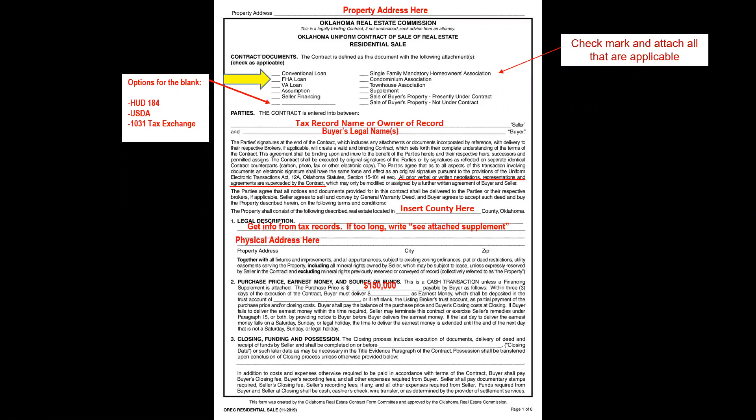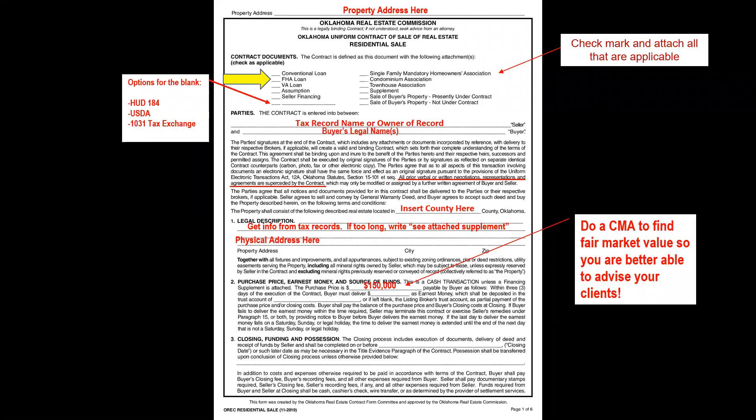In paragraph two, the purchase price is whatever the buyer wants to offer. Before allowing the buyer to select an amount, please do a market analysis to determine fair market value so you can better advise your clients. They can always offer over the asking price, but you need to inform them whether that's a good decision, because you don't want appraisal problems later. The advertised price may not always be the fair market value.